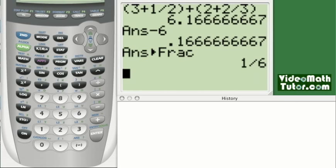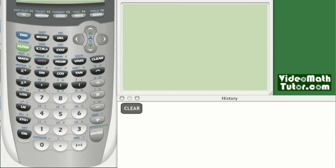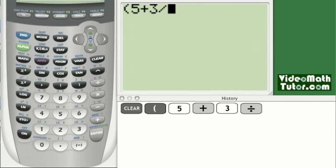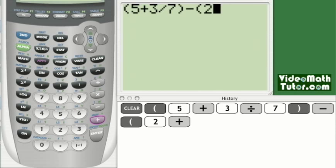What is 5 and 3/7 minus 2 and 2/3? We press clear, and then parentheses, 5 plus 3 divide by 7, close parentheses, minus open parentheses, 2 plus 2 divide by 3, close parentheses, and enter.